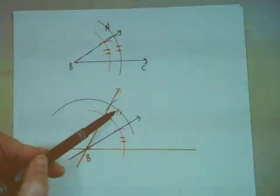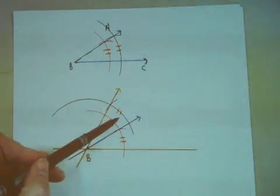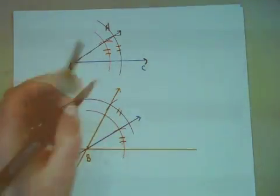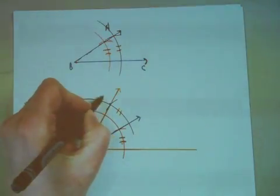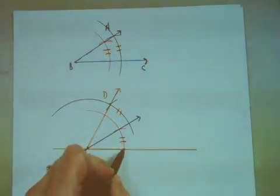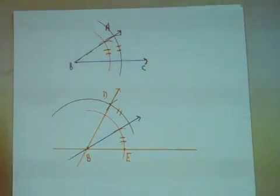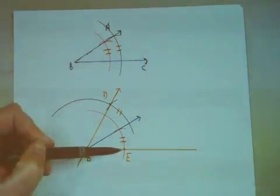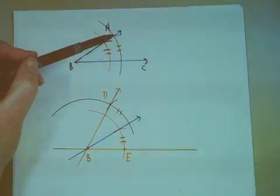how about we call him D, and down here I can call him E, angle DBE is twice the size of angle ABC.